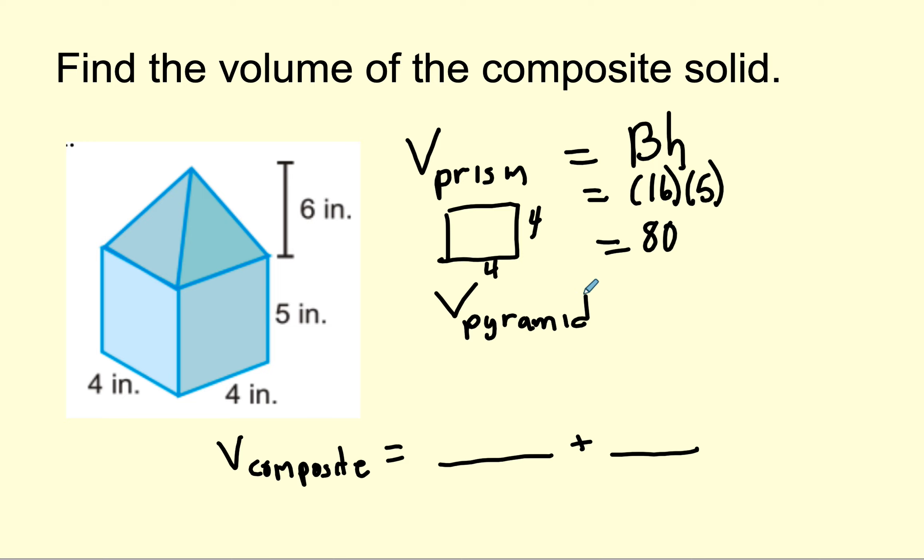Now to figure out the volume of the pyramid, it's another formula. It's 1 third area of the base times the height. Now the base of the pyramid is also a square. So we can go ahead and put the 16 in here. And the height over here is 6. I can do a little reducing here. 3 goes in here once. 3 goes in here twice. And then, so that's going to be 32. So the volume of the prism is 80. The volume of the pyramid is 32. And when you add them together, that's 112. And it'll be inches cubed.